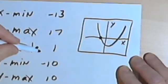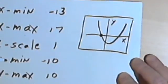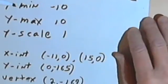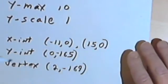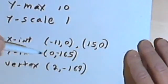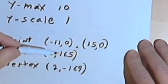I'll get back to the scale in a second. For the y-minimum, I have to include, let's see what kind of y values I had. Well, I had a y-intercept at negative 165, the vertex was even lower.